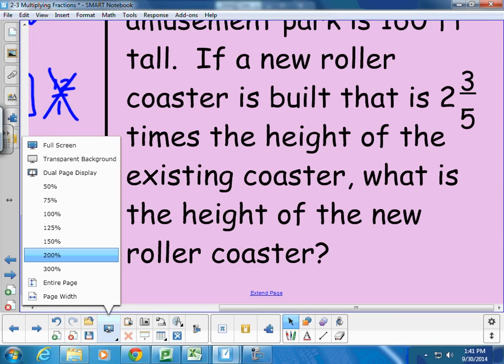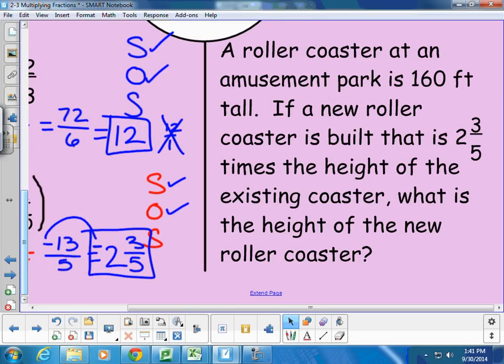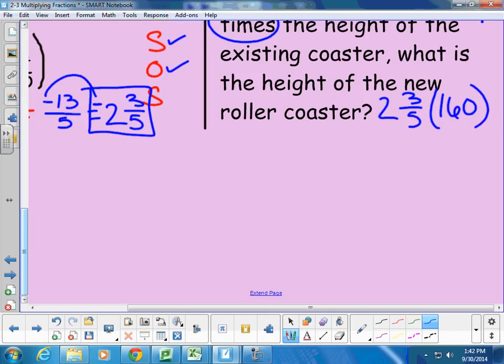All right, a quick word problem for us. Let me zoom out a little bit. Maybe you can try it on your own first and see what you can do. Because fractions are so much part of our real life that it's important you know how to do this. A roller coaster at an amusement park is 160 feet tall. If a new roller coaster is built that is two and three-fifths times the height of the existing roller coaster, what is the height of the new roller coaster? I'm going to use my good mathematician skills and make a prediction that this roller coaster, since it's two and some times bigger, I know it's going to be a little bit more than twice as much as the original. So my answer should be for sure more than 300 because 160 times two is more than that. But I know it says times, so I know I need to multiply to find this out.